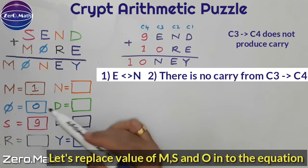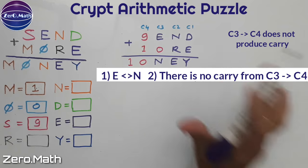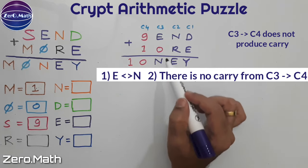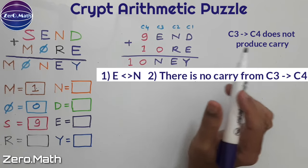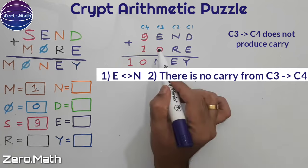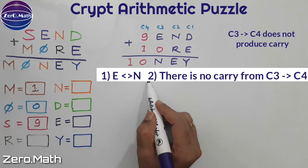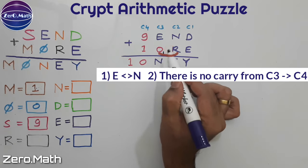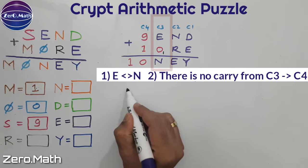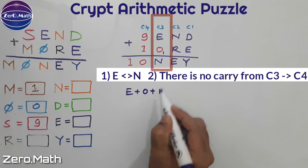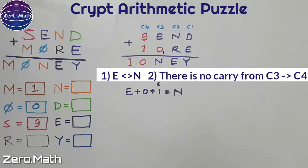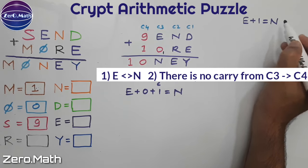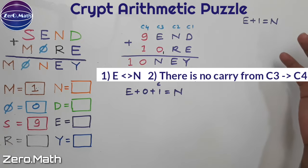Let's replace the values of M, O, and S into the equation. Two key facts: E is not equal to N (each letter is unique), and there is no carry from C3 to C4. Given these facts, there must be a carry from column C2 to C3. Since E is not equal to N, adding the carry to E gives N — that is, E plus 0 plus 1 (carry from C2) equals N. So E plus 1 equals N.